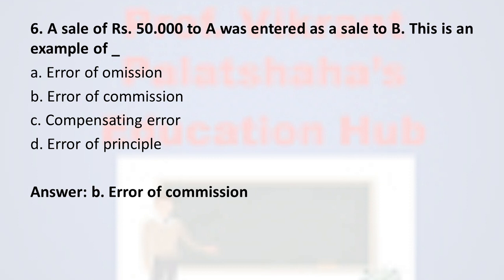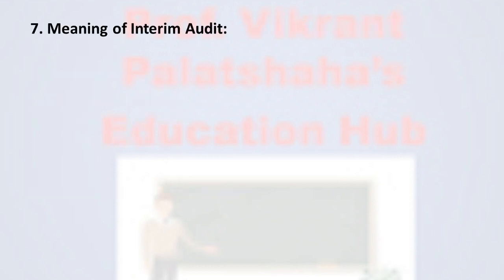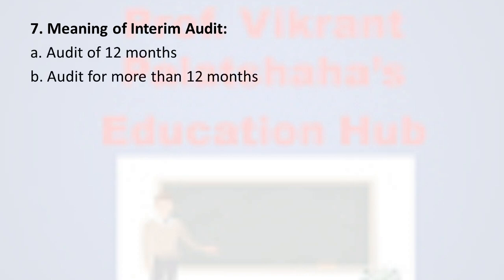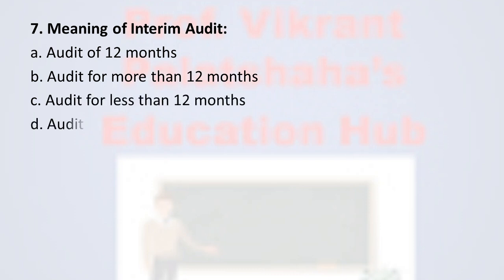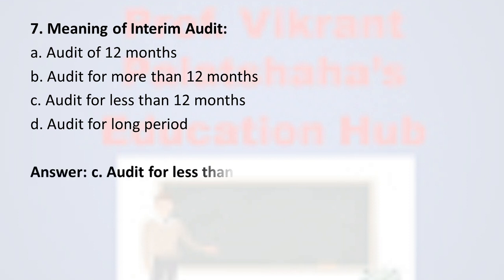Question number seven: meaning of interim audit — option A audit of 12 months, option B audit for more than 12 months, option C audit for less than 12 months, and option D audit for a long period. The correct option is option C, audit for less than 12 months. The audit which is conducted for less than 12 months is called as the interim audit.